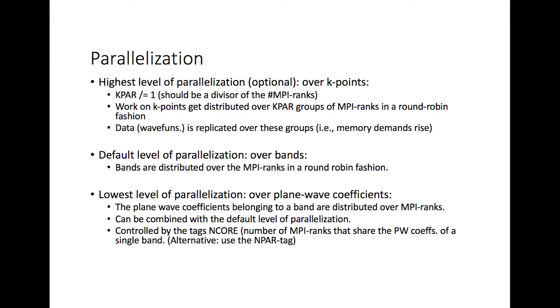Does everybody know what an MPI rank is? If you use MPI, you start independent processes that we call MPI ranks, and they essentially run copies of the program that communicate with each other. There are instructions inside the program to divide the work, divide the data, and there are explicit points where these processes hook up and exchange information. Those are the MPI ranks - these individual processes that you start.